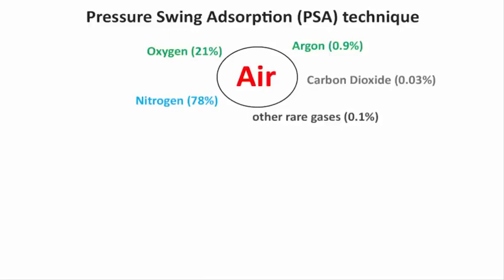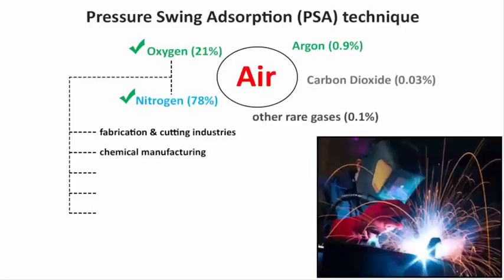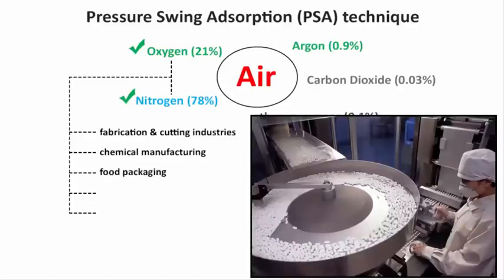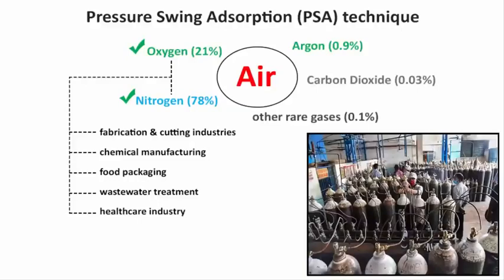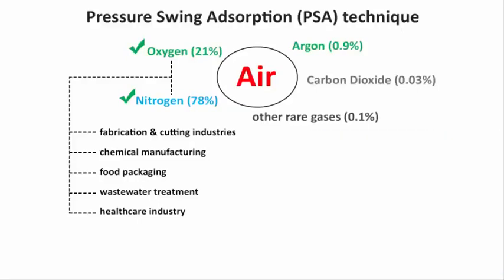This technology can be used to separate nitrogen and oxygen gas, which are used for various industrial applications like fabrication and cutting industries, chemical manufacturing, food packaging, wastewater treatment and the healthcare industry. Although this technology is used to separate oxygen as well as nitrogen, this video will focus only on oxygen generation.